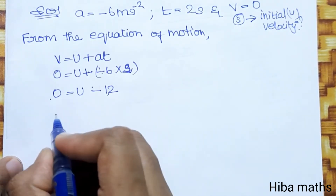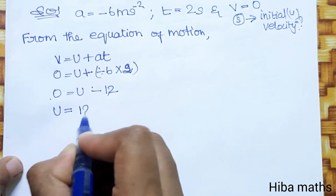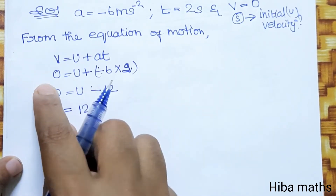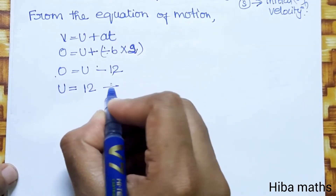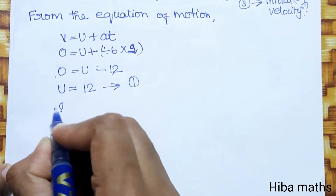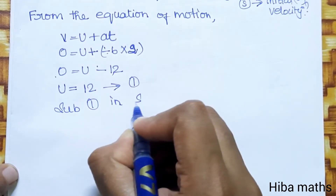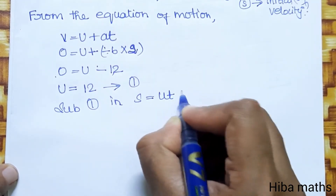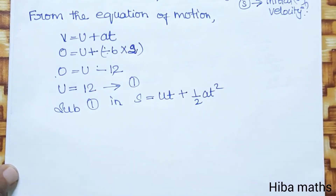So u is equal to 12 meters per second. Now, to find the distance, we use the formula s = ut + half of at squared.